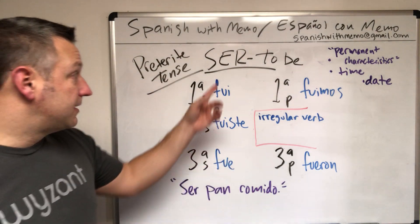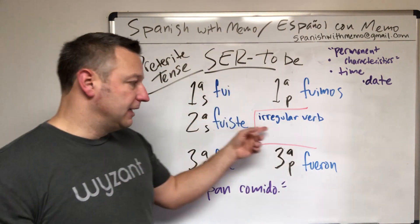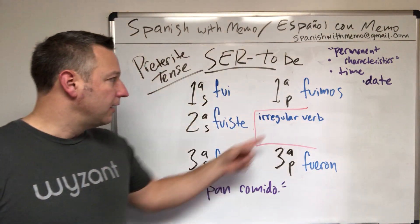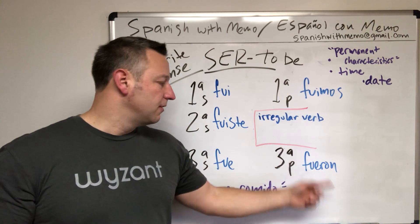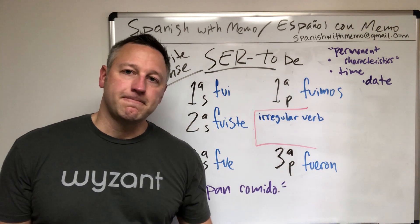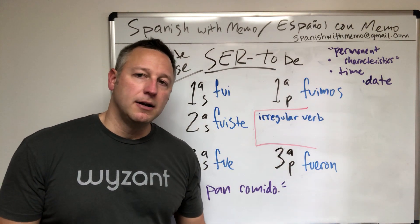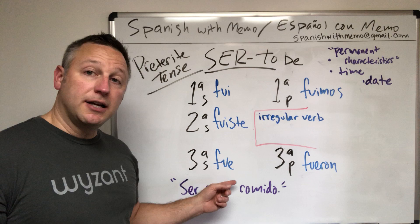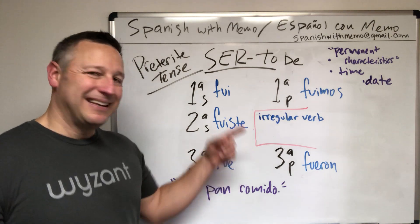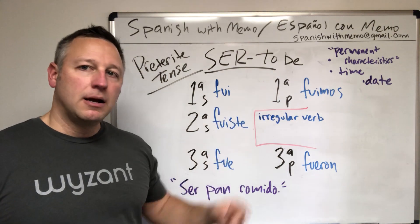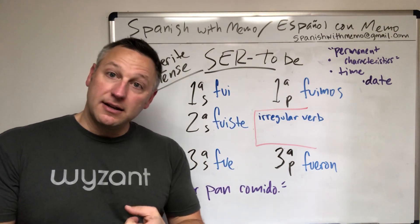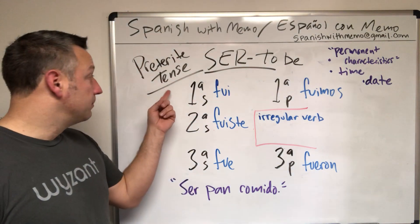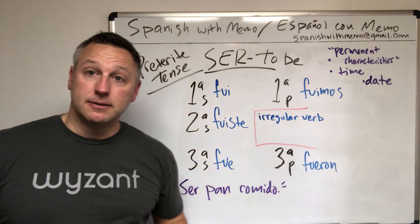So ser is an irregular verb, obviously, right? Fui, fuiste, fue, fuimos, fueron. You'll probably see this conjugation again in the ir form, because ser and ir are the same conjugation in the preterite tense.